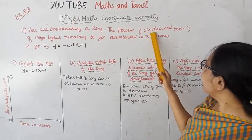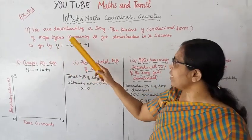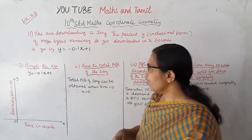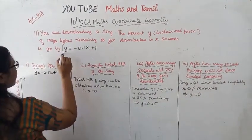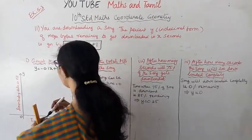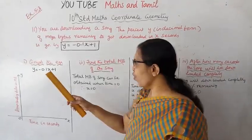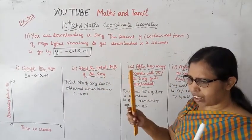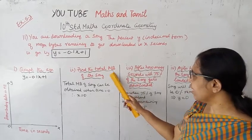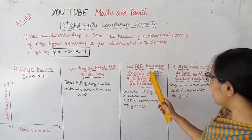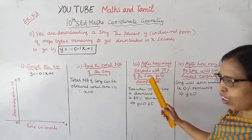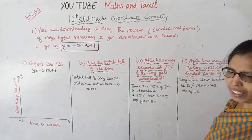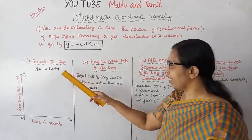The percent y in decimal form of megabytes remaining to get downloaded in x seconds is given by y equal to minus 0.1x plus 1. This question has 4 parts. Grab the equation, find the total MB of the song, find at which MB the song currently is, after how many seconds will 75% of the song get downloaded, and after how many seconds will the song be downloaded completely.